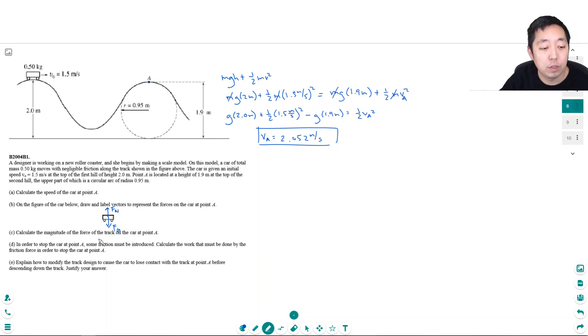Calculate the magnitude of the force on the track at the car at point A. Now, you might think that the net force is zero here, but it's not because it's moving in a circular path. So it has some acceleration.